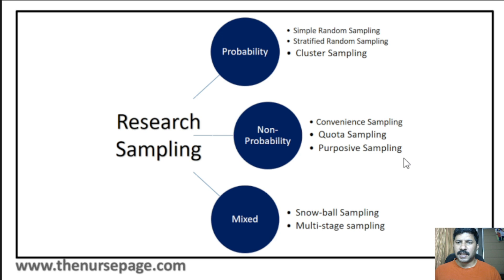Then mixed sampling — mixed sampling mainly includes snowball sampling and multi-stage sampling. Snowball sampling was earlier called under non-probability sampling, so don't confuse. If it is called non-probability sampling it will be right, and I will explain the term so you will understand why it is also called mixed type.